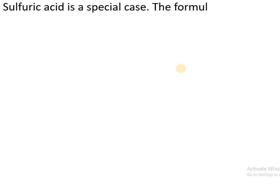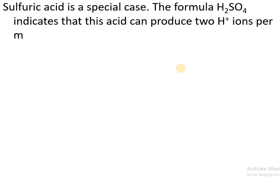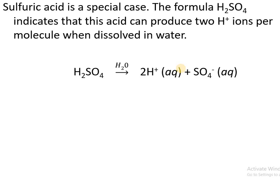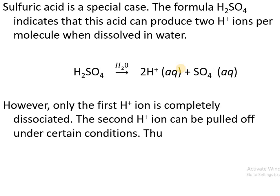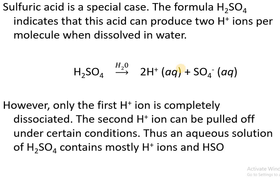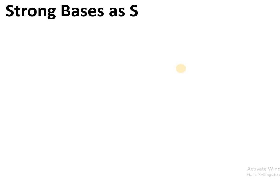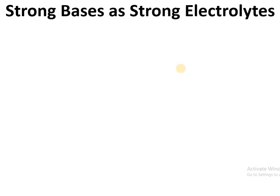Sulfuric acid is a special case. The formula H₂SO₄ indicates that this acid can produce 2 H⁺ ions per molecule when dissolved in water. However, only the first H⁺ ion is completely dissociated; the second H⁺ ion can only be pulled off under certain conditions. Thus, an aqueous solution of H₂SO₄ contains mostly H⁺ ions and HSO₄⁻ ions.